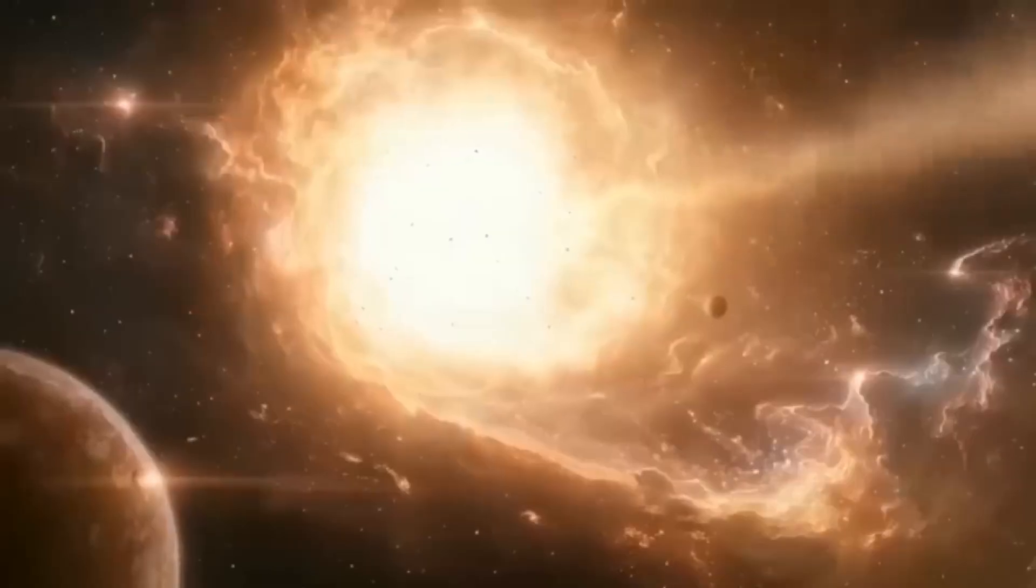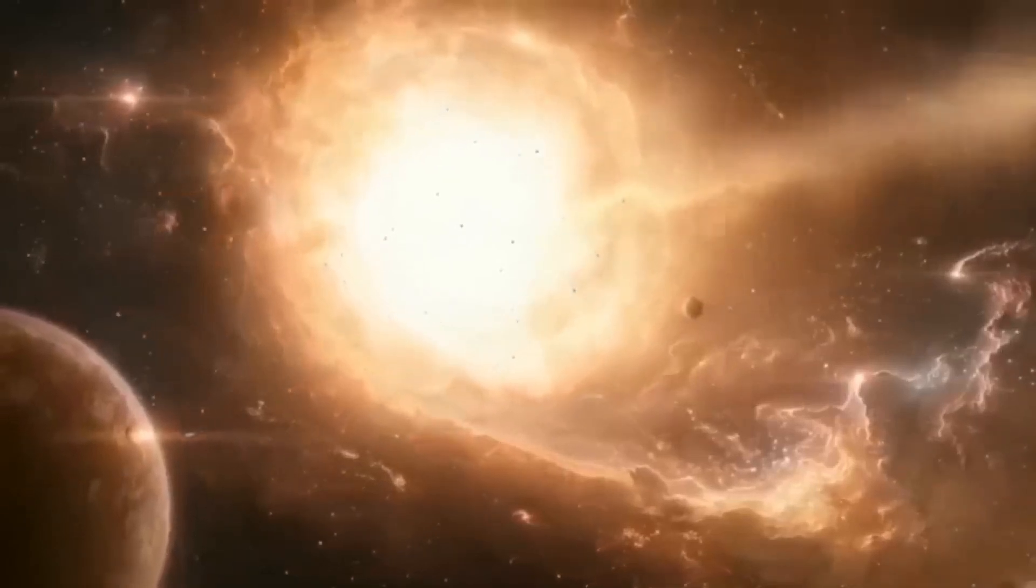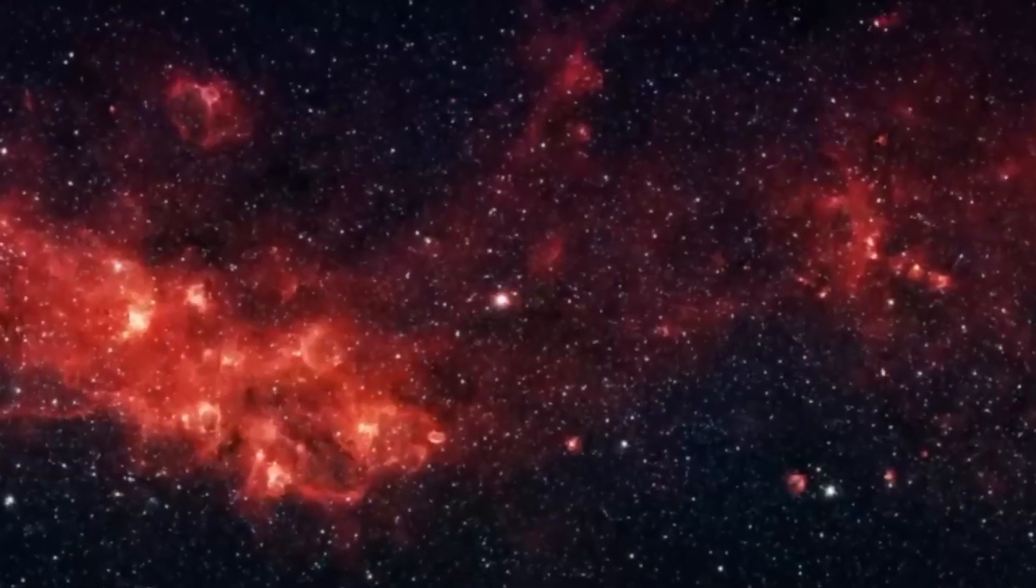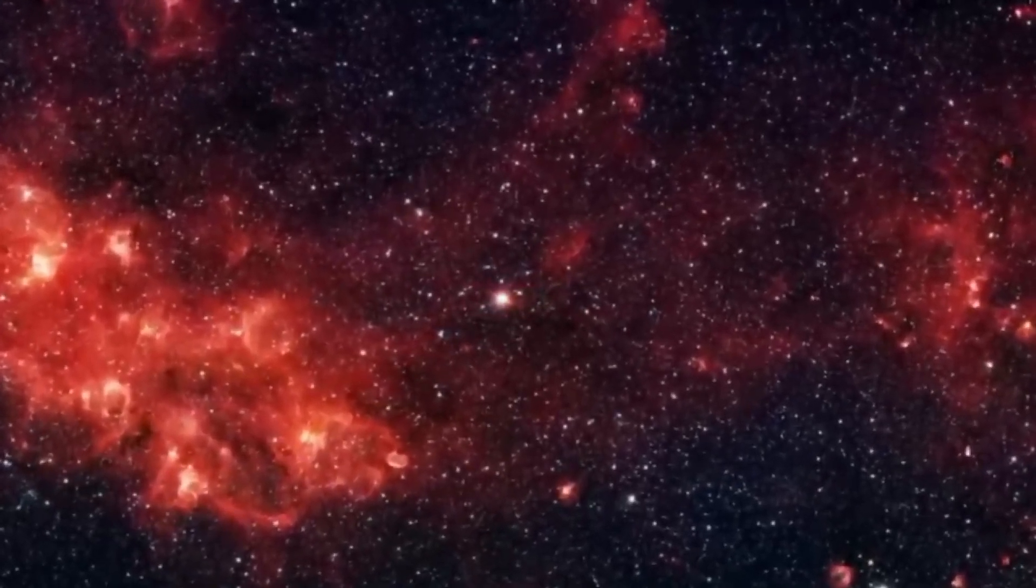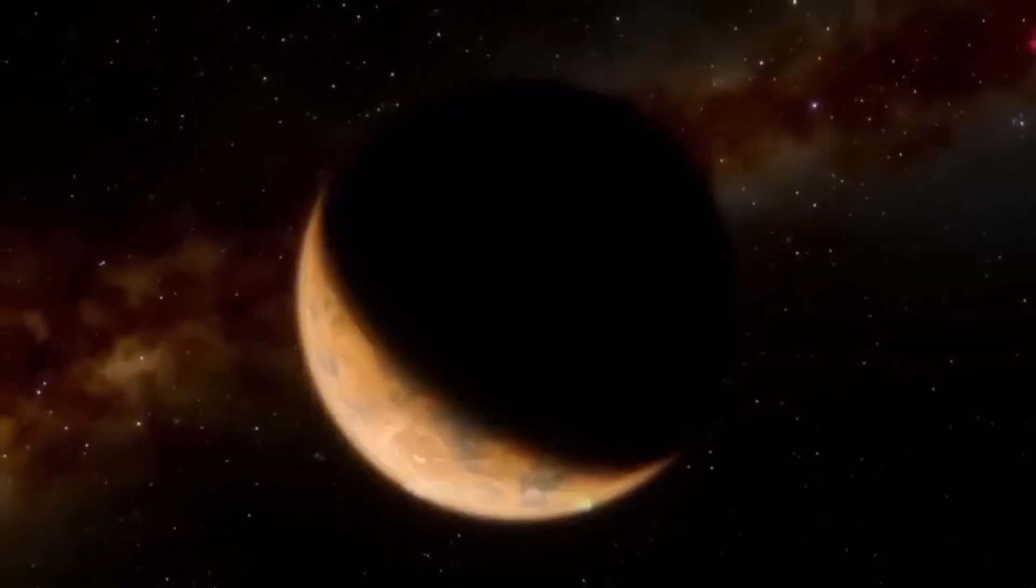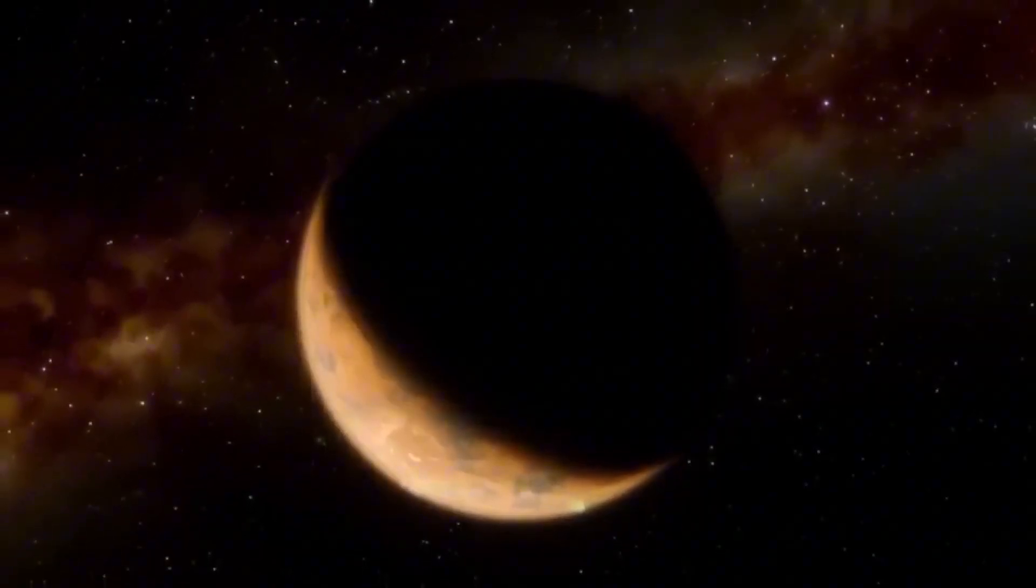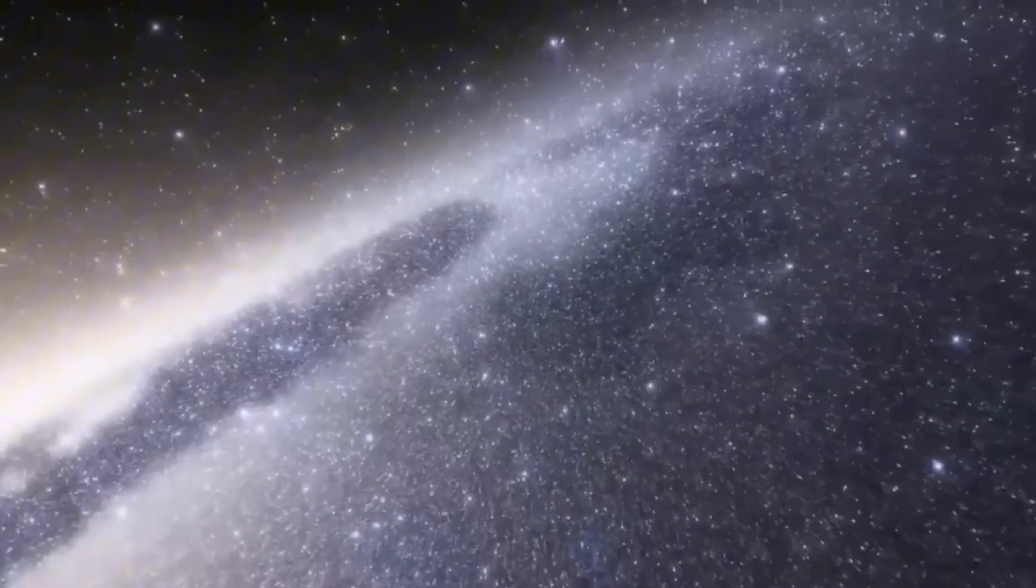Proxima b orbits within the habitable zone of Proxima Centauri, a red dwarf star located just 4.24 light-years away. This zone is the region neither too hot nor too cold, where liquid water could theoretically exist on the surface of a planet. The planet itself is approximately 1.3 times the mass of Earth, placing it firmly in the terrestrial category.